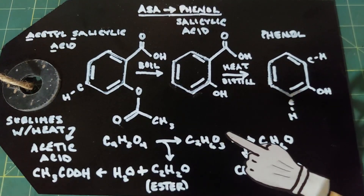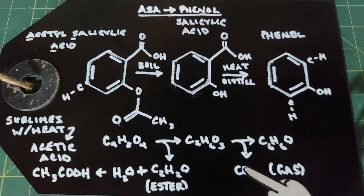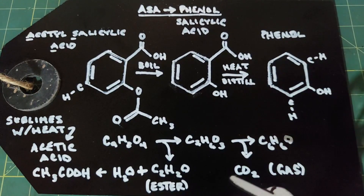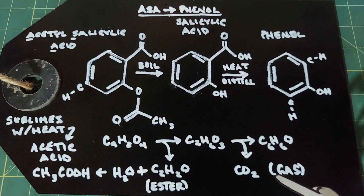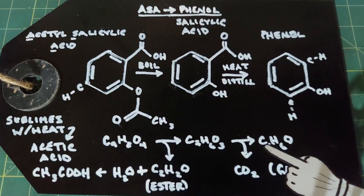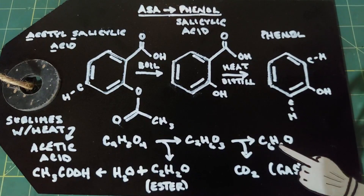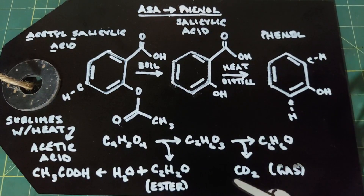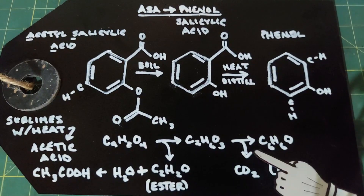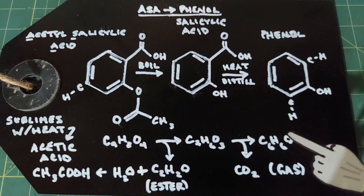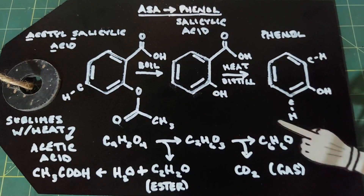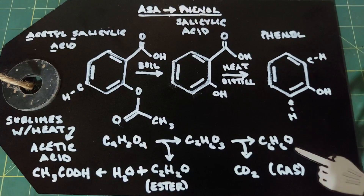We're going to put the salicylic acid in a distillation apparatus and heat it. When we do that, we're going to drive off the carbon dioxide group — this is the carboxyl group — and carbon dioxide is driven off as a gas. We're left with C6H6O. So C7H6O3, lose a CO2, and you have C6H6O. That is phenol, and that's how we end up with our product.